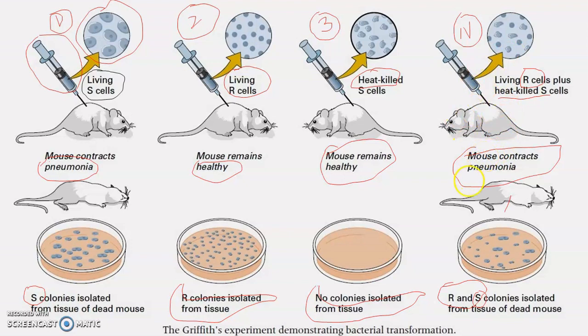From this observation, Griffith concluded that something was transferred from the heat-killed S bacteria to the R-type bacteria, and this something was responsible for transforming living R-type bacteria into living S-type bacteria. As a result, those bacteria became S bacteria — smooth and pathogenic — causing pneumonia and the death of the mouse.